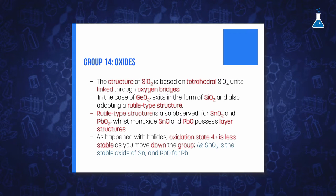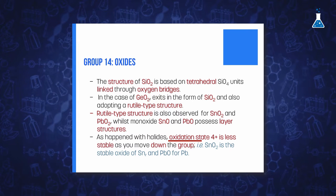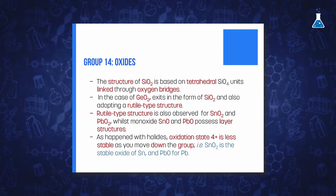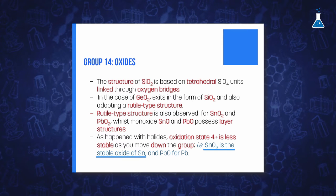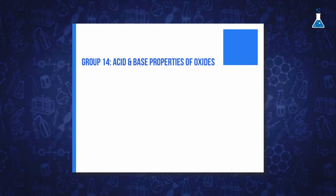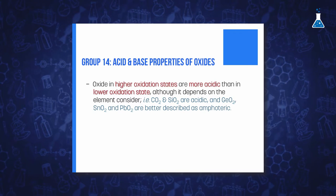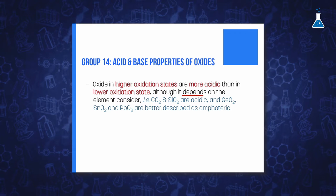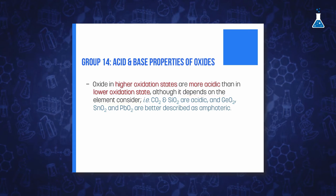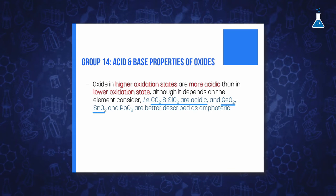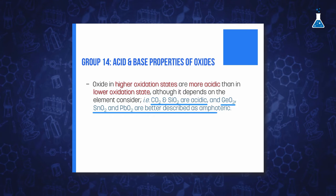As observed for halides and hydrides, oxidation state 4+ is less stable on descending the group. So, whilst tin dioxide is still the most stable oxide of tin, lead(II) oxide is the most stable oxide of lead. With respect to the acid-base properties of the oxides, generally oxides in higher oxidation states are more acidic than those in lower oxidation states, but it also depends on the element considered. Whilst carbon and silicon dioxides are clearly acidic, germanium, tin, and lead dioxides are better described as amphoteric.